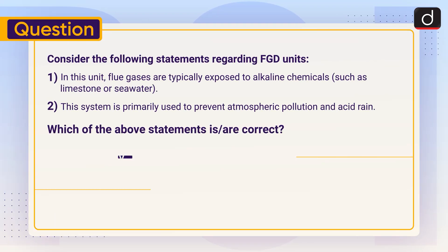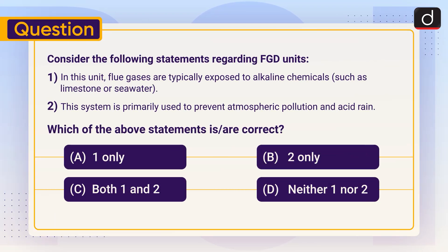Now for a practice question. Consider the following statements regarding FGD units: (1) In this unit, flue gases are typically exposed to alkaline chemicals such as limestone or seawater. (2) The system is primarily used to prevent atmospheric pollution and acid rain. Which of the above statements is correct? A) Only one, B) Only two, C) Both one and two, D) Neither one nor two. Send your answer in the comment section.